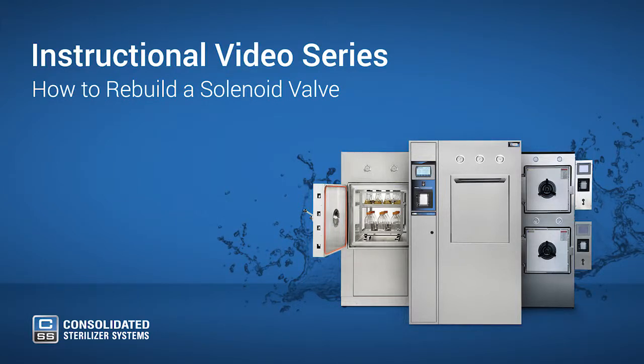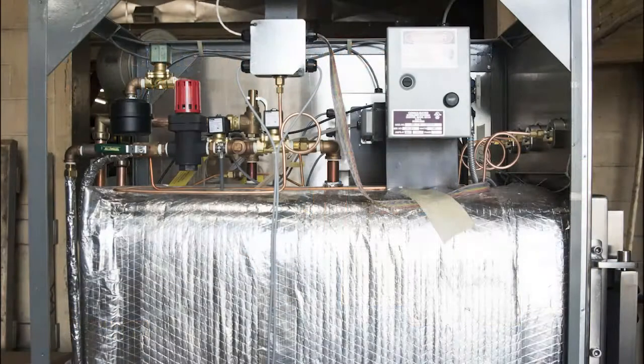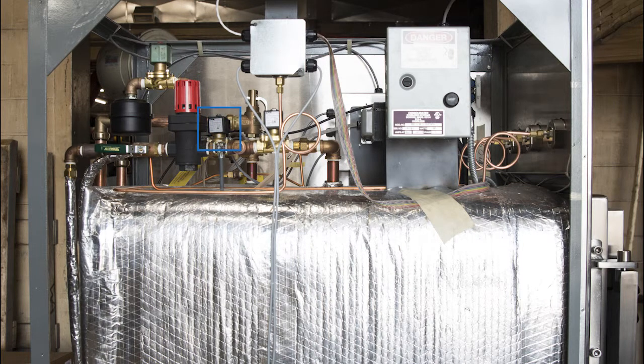A good time to perform preventive maintenance on your autoclave is after 300 cycles. The steam, water, exhaust, and air solenoid valves are important components to check.